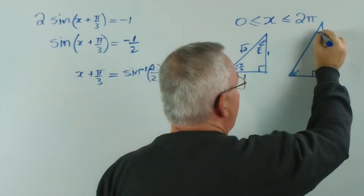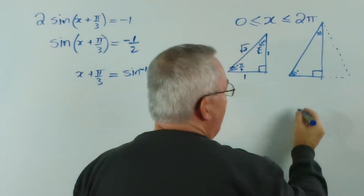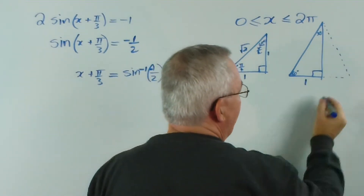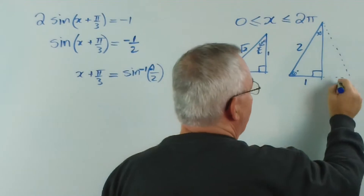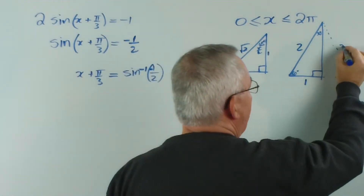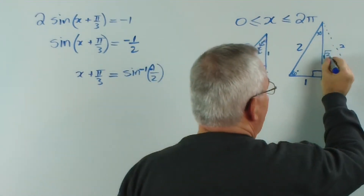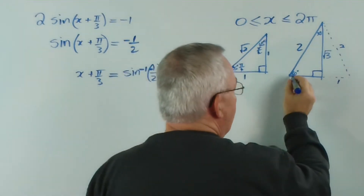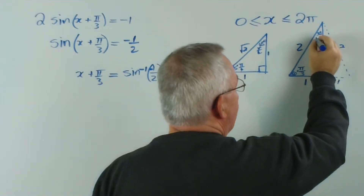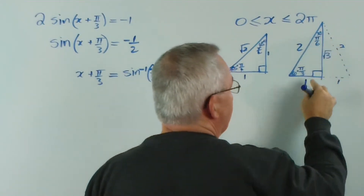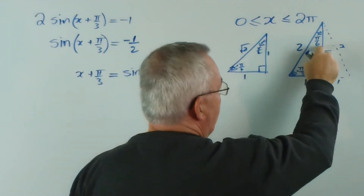This is a 60-30 degree triangle, which is what you get when you cut an equilateral triangle in half. If this side is one, then that one is one too, making the hypotenuse two. Using Pythagoras' theorem, we get root three for the remaining side. In terms of radians, 60 degrees is pi on three, and 30 degrees is pi on six. You can see that the six and the three are together in this triangle.